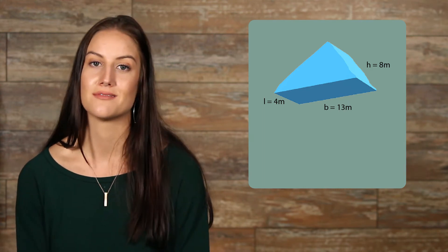Let's take a look. We have a triangular prism with a height of 8 meters, a base of 13 meters, and a length of 4 meters. All we have to do is plug our numbers into our formula, then solve.